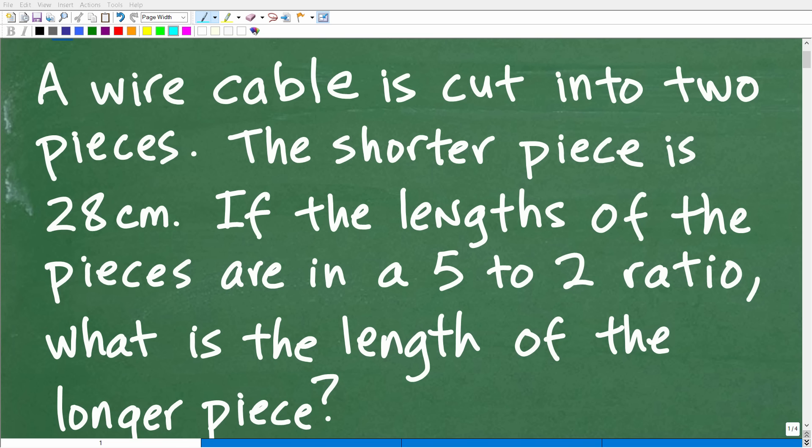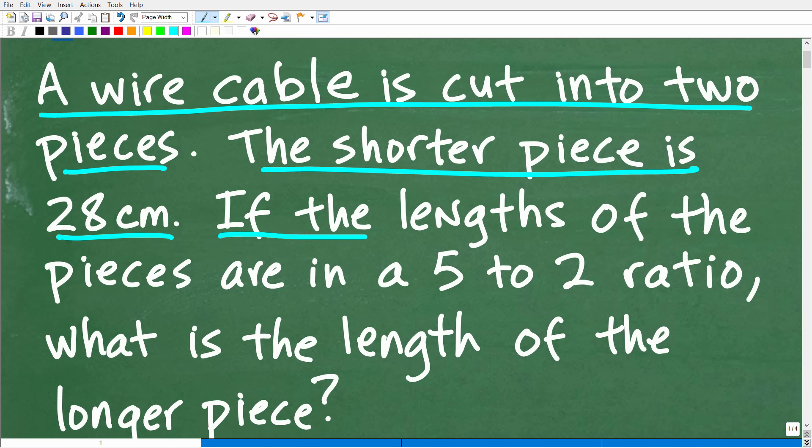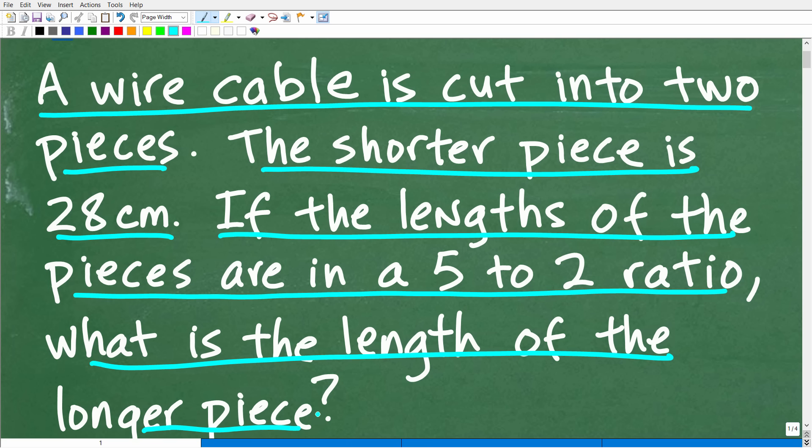Okay, so get ready to put your math skills to work to solve this interesting little math word problem. Matter of fact, let me go ahead and read the problem. It is the following: A wire cable is cut into two pieces. The shorter piece is 28 centimeters. If the lengths of the pieces are in a five to two ratio, what is the length of the longer piece?